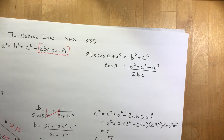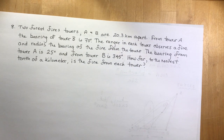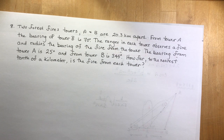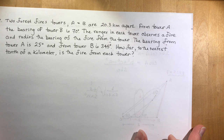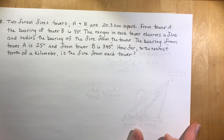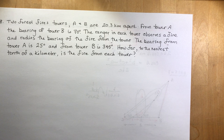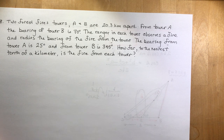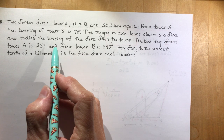Okay, now let's go to the really tough question — number 8 from your homework assignment. It says: two forest fire towers A and B are 20.3 kilometers apart. From tower A, the bearing of tower B is 70 degrees. The ranger in each tower observes a fire and radios the bearing of the fire from the tower. The bearing from tower A is 25 degrees, from tower B is 345 degrees. How far, to the nearest tenth of a kilometer, is the fire from each tower? Now you want to make a little sketch first. You might not be familiar in grade 11 with what a bearing is, so I'm going to sketch how bearing works.